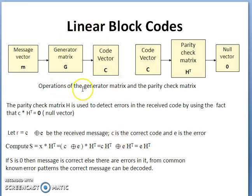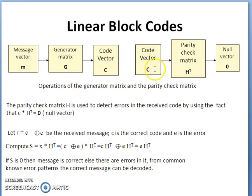At the transmitter, the message vector m is multiplied by the generator matrix G to produce the code vector c. At the receiver, to check for errors, the received code vector is multiplied by the parity check matrix H transpose. If the result is the null vector, it means there is no error.